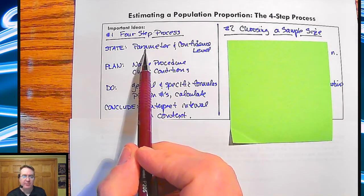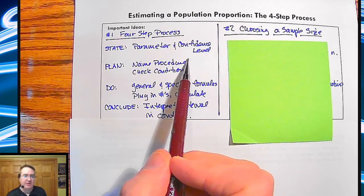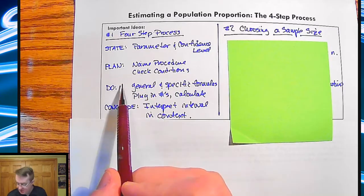So the parameter and the confidence level. So I am, P is whatever's going on in the population, confidence level 95, 97, 99, whatever.